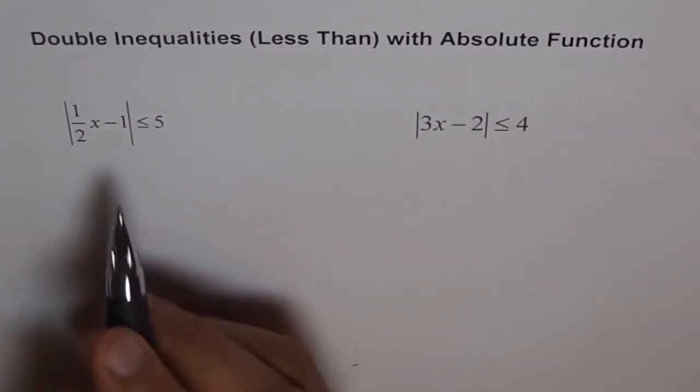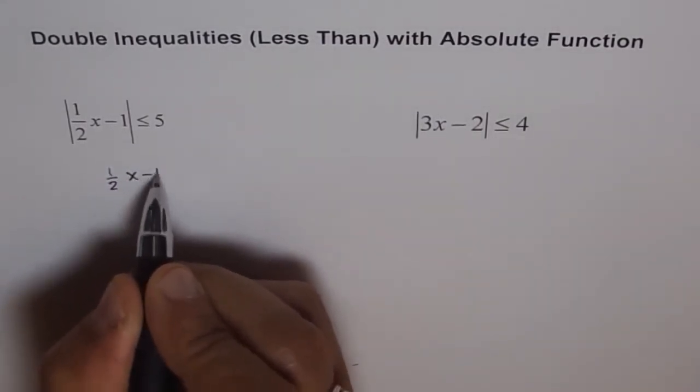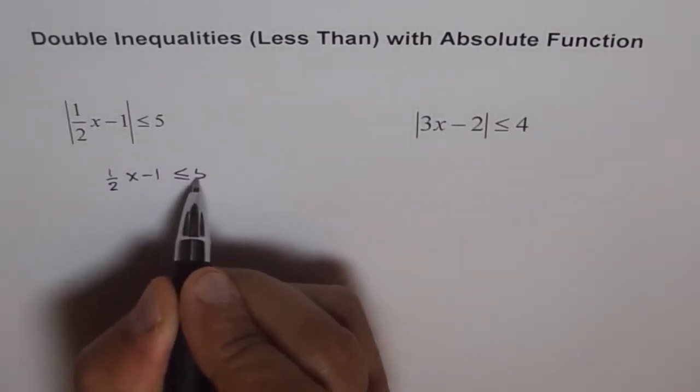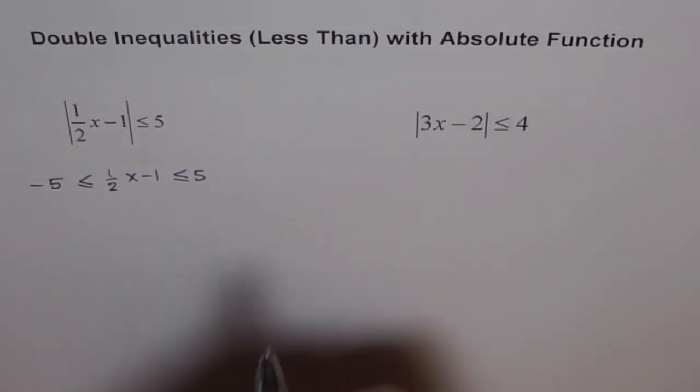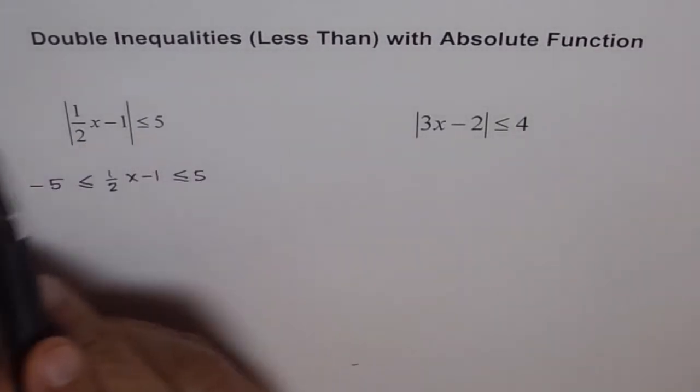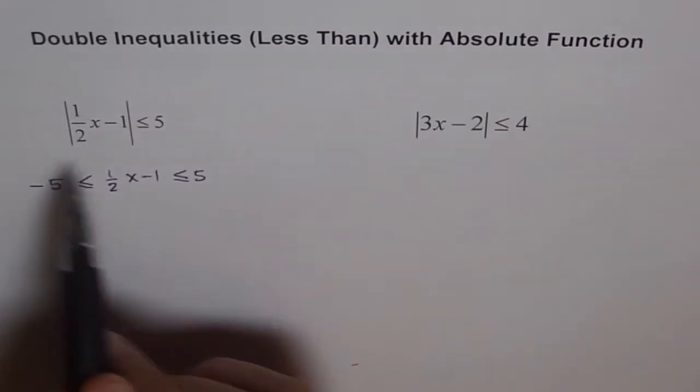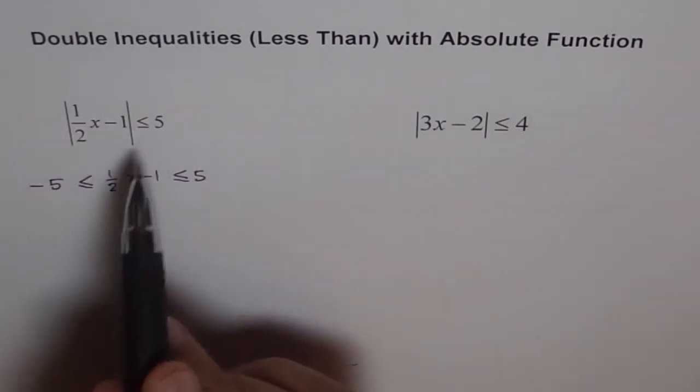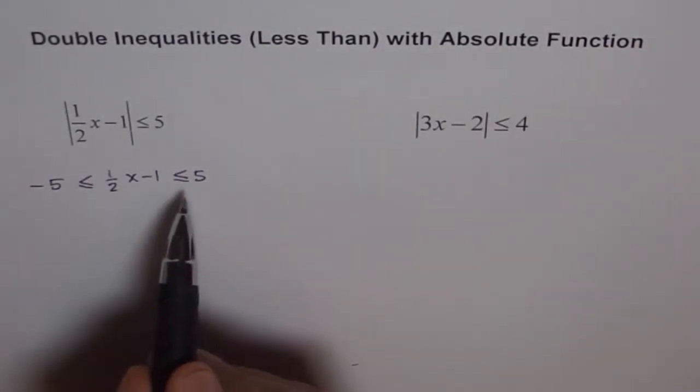Therefore, we can write this as half of x minus 1 is less than equal to 5 and greater than equal to minus 5. That is an important understanding of absolute function. Absolute function less than 5 means it is within the domain of anything 5 in any direction, plus or minus 5. It is within minus 5 and plus 5. This kind of definition helps to solve absolute inequalities.